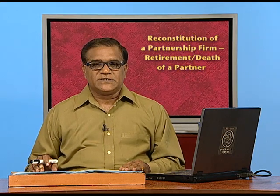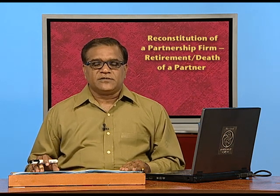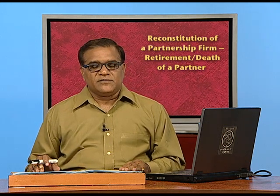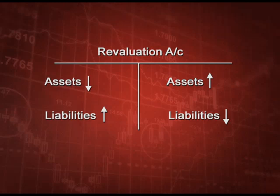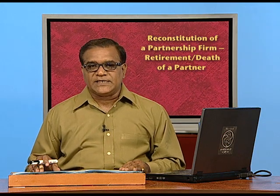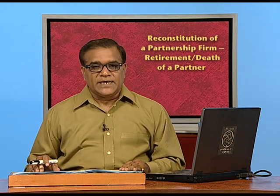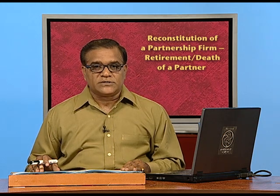Now, how to calculate revaluation of assets and liabilities? The treatment is exactly the same as what we have done in admission, just to recapitulate. Debit side means when losses are there and credit side means when income is there. We get losses when the asset value decreases or liability value increases. Conversely, when asset value increases it is a gain, and when liability decreases it is a gain. We calculate profit or loss and distribute to all old partners. In case of death, we also include the deceased partner since he was there at the time of revaluation.